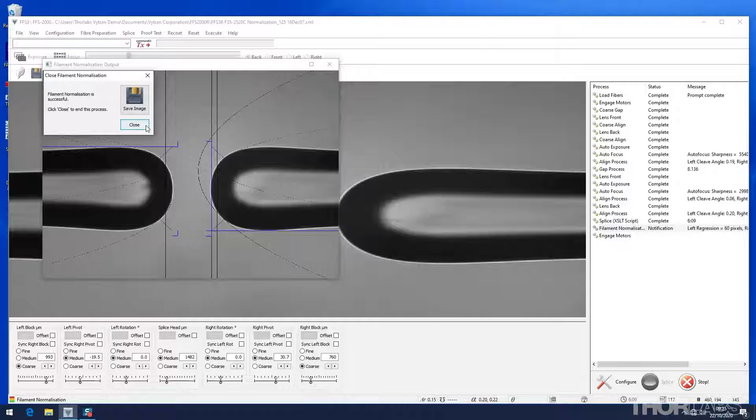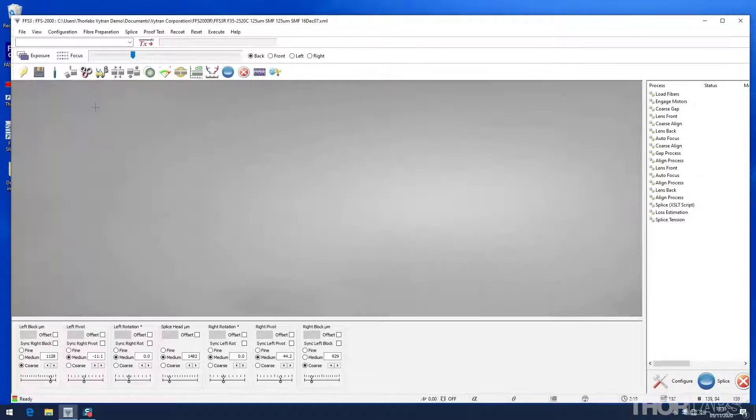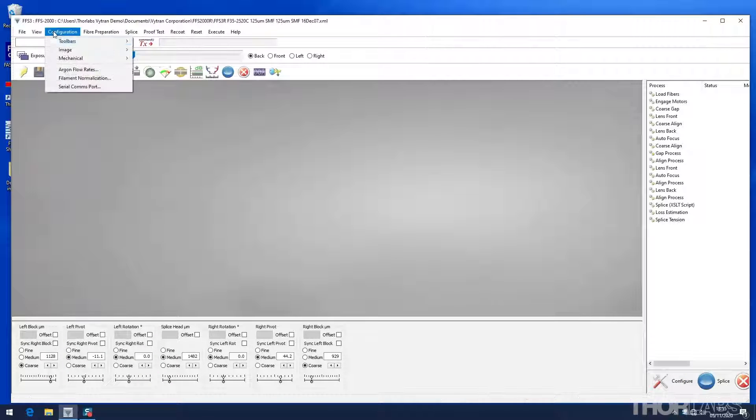If large changes of the filament power offset greater than half a watt are seen between consecutive normalizations, this may indicate that the filament is approaching its end of life.